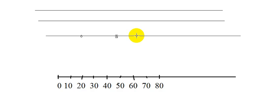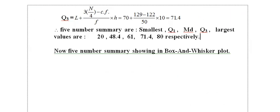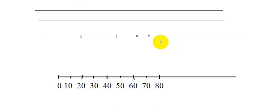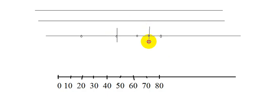We plot the five values: 20 is the smallest value, 48.4 is Q1, 61 is the median, 71.4 is Q3, and 80 is the largest value. These are marked on the scale.